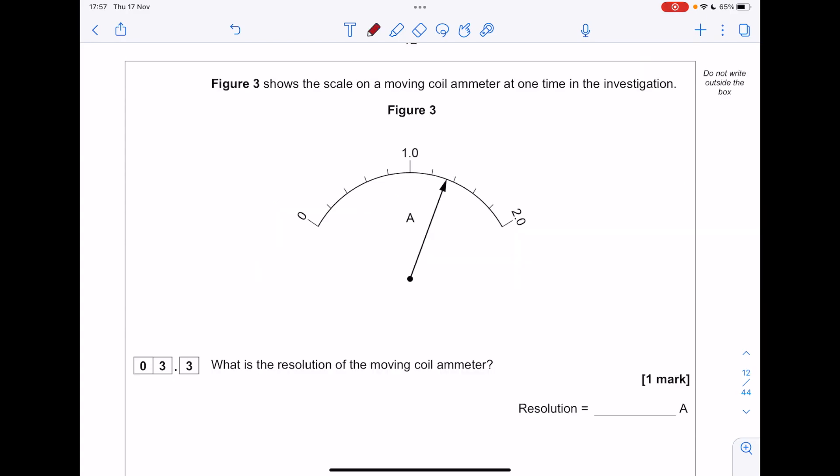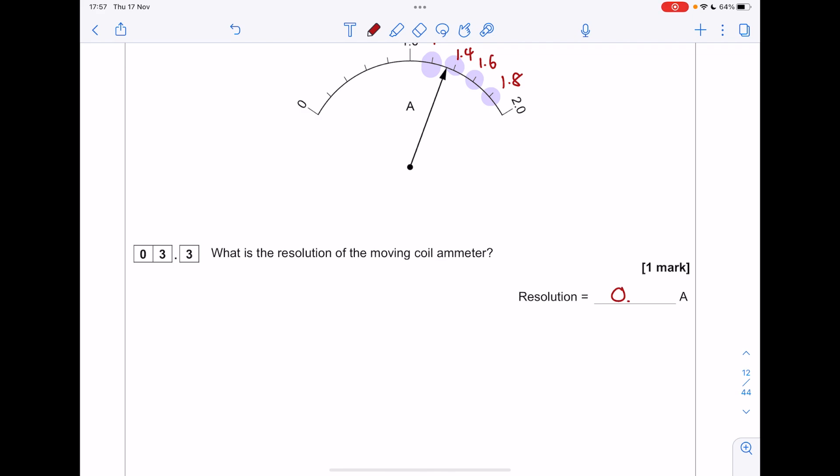Figure 3 shows the scale on a moving coil ammeter at one time in the investigation. What is the resolution of the moving coil ammeter? Let's have a look at all these increments. Hopefully you can see that would be 1.2, 1.4, 1.6, 1.8. So the resolution is the difference in these numbers, which is 0.2 amps.